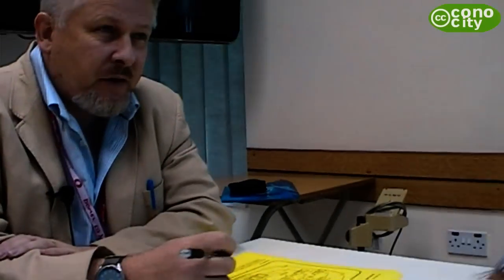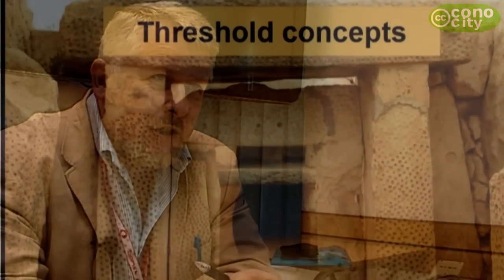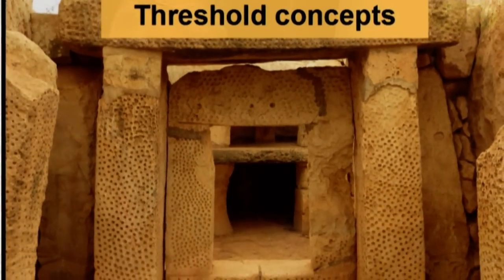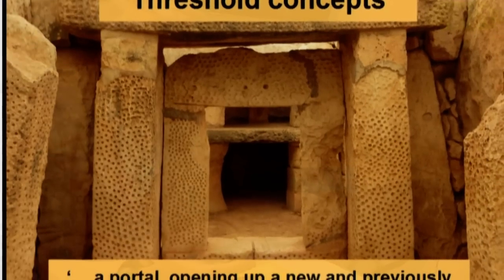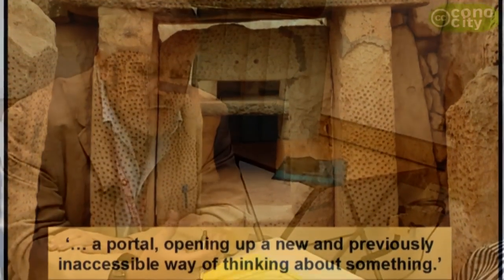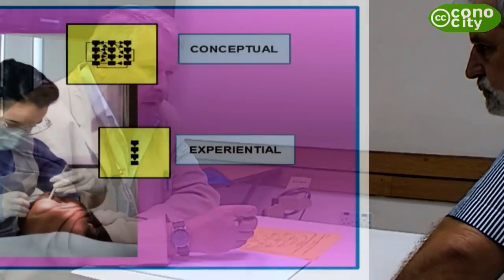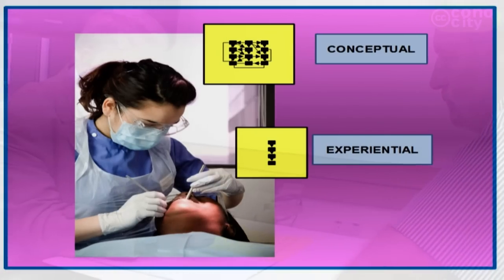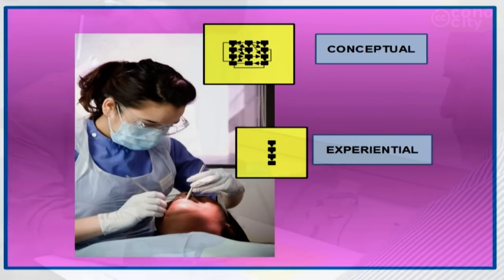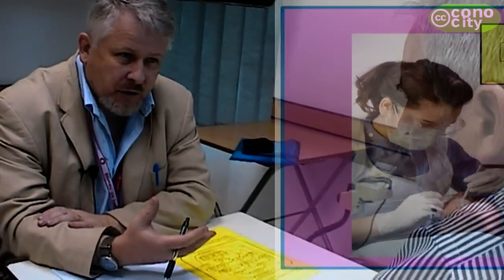We're looking at the interface between these two knowledge structures, and one of the working theories we have is that the space between these knowledge structures is occupied by what have been called threshold concepts — particular concepts which, once grasped by students, are transformative of their understanding and also integrate the two halves of their knowledge. In clinical science, for example, we talk about things like care or the patient being a threshold concept.